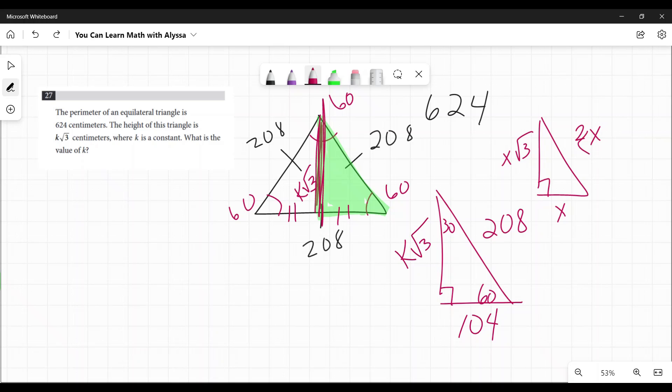Then as we say here, 2X, X, X square root of three. Once I have that X on the bottom, I multiply it by the square root of three and get that other side. So here, this side would be 104 times the square root of three. So K is equal to 104.